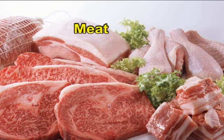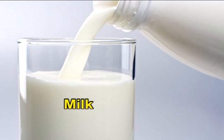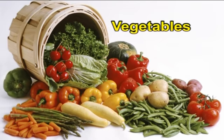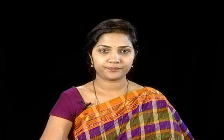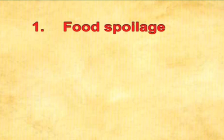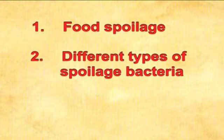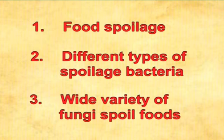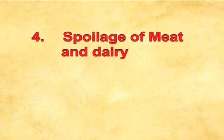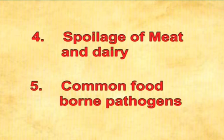Food examples include meat, milk, vegetables, canned products, etc. The following topics are highlighted: food spoilage, different types of spoilage bacteria, a wide variety of fungi that spoil foods, spoilage of meat and dairy, and the common foodborne pathogens.